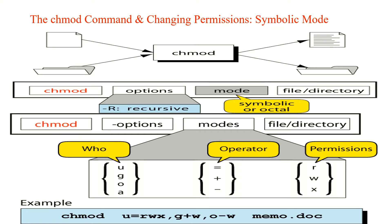In the chmod syntax, options refer to whether the command runs recursively. The mode specifies whether you are using relative mode or absolute mode, applicable for a file or directory. The chmod command can also be used for relative permissions. When changing permissions in relative manner, chmod only changes the permissions specified in the command line and leaves all other permissions unchanged. In this mode, it uses the following syntax.